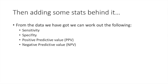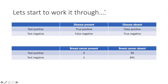From this data we can work out sensitivity, specificity, positive predictive value, and negative predictive value. The best way to do this is with a table, always set out the same way: along the top is your gold standard result — disease present and disease absent — and down the side is test positive and test negative. Filling in the cells gives you: true positive, false positive, false negative, and true negative.